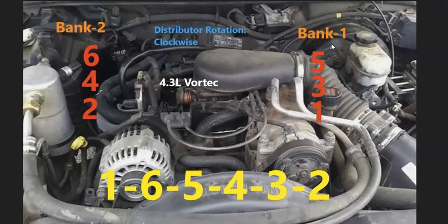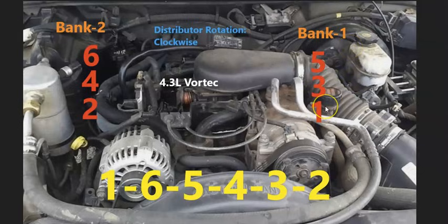Bank one side of the engine is going to be on the driver's side, and bank two is going to be on the passenger side. If you ever need to know what side of an engine is bank one or bank two, just find the number one cylinder — that side is bank one, and the opposite is bank two.